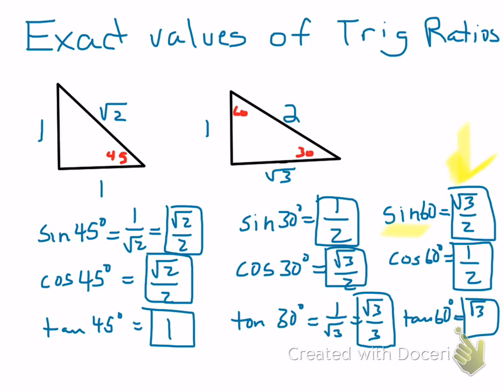They don't want you to use a decimal value. They want you to use that square root of 3 over 2 instead of the decimal value you would get.